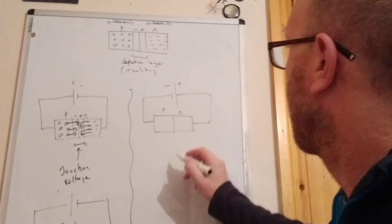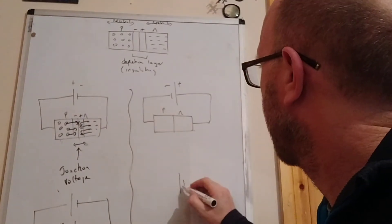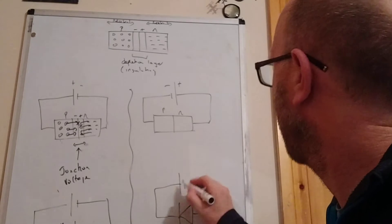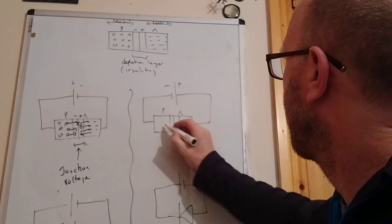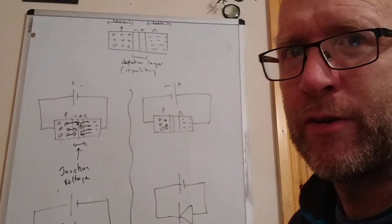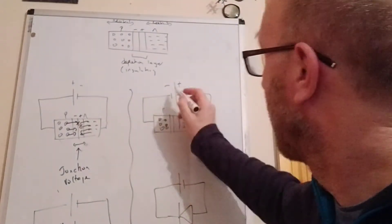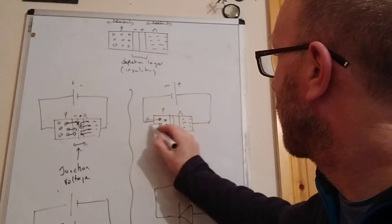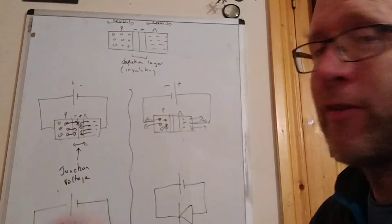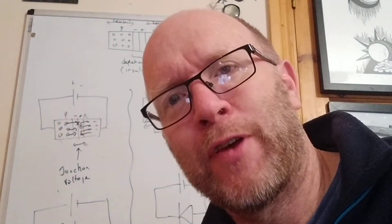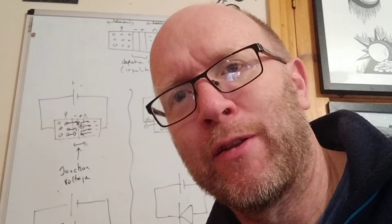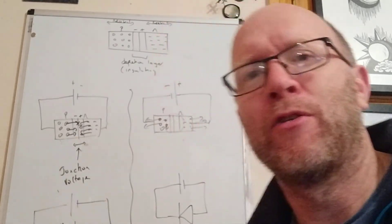Reverse bias is the opposite. The positive charges are attracted to the minus, the negative charges are attracted to the plus, and the depletion layer instead of getting smaller gets bigger. Effectively no current flows — you are actually making the insulating layer bigger. No current flows.